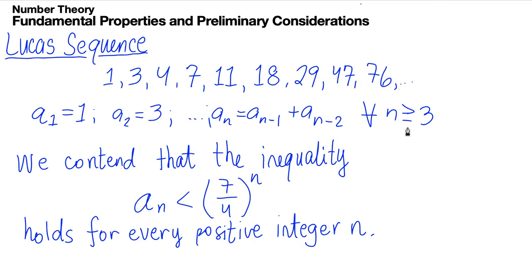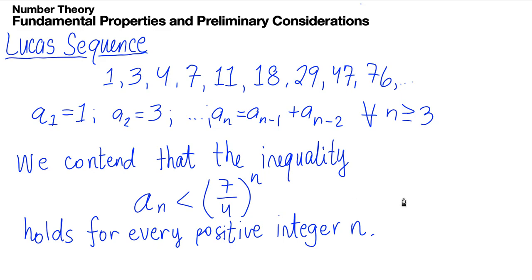This recurrence holds for all n greater than or equal to 3. What we want to prove here is the inequality: a sub n is always less than (7/4)^n, and this holds for every integer n. The argument is interesting because in the inductive step, it is necessary to know the truth of this inequality for two successive values of n in order to establish the truth for the following value.